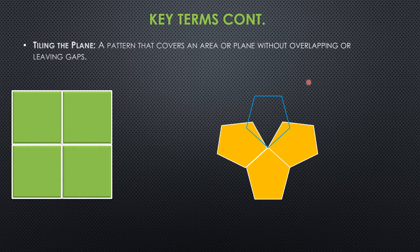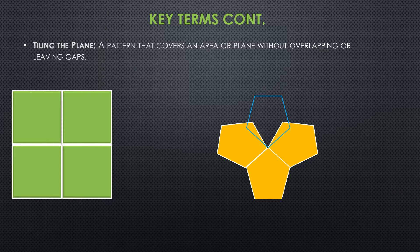Unfortunately, in this example, I can't tile the plane properly. I've got three of these pentagons that go together, but if I went to put the fourth one in, I would either overlap it or if I took that out, there'd be a massive gap. So unfortunately, I couldn't tile the plane here properly as those shapes didn't go together perfectly.